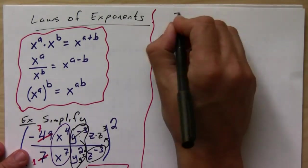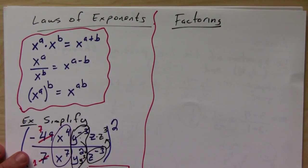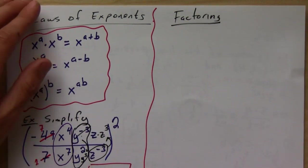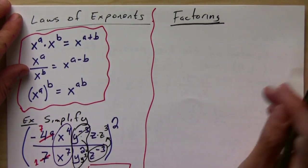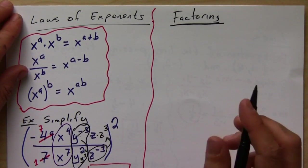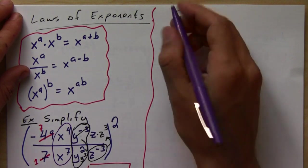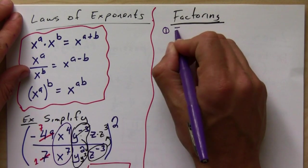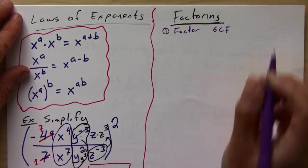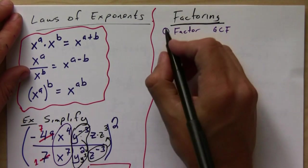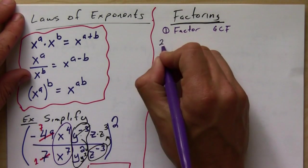Now let's talk quickly about factoring. You guys should already know how to factor, but just a quick reminder of the basics. Remember the first thing you do when you're going to factor is always, always, always factor out the greatest common factor. And then you look at the number of terms.